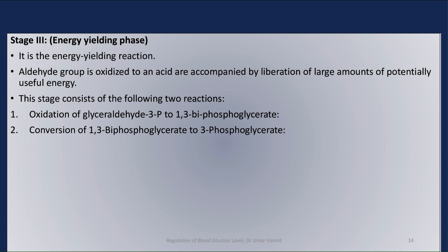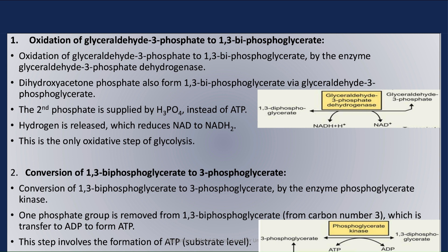Step 1 is the oxidation of glyceraldehyde-3-phosphate to 1,3-bisphosphoglycerate, catalyzed by the enzyme glyceraldehyde-3-phosphate dehydrogenase. Dihydroxyacetone phosphate also forms 1,3-bisphosphoglycerate via glyceraldehyde-3-phosphate. The second phosphate is supplied by phosphoric acid instead of ATP. Hydrogen is released, which reduces NAD to NADH2. This is the only oxidative step of glycolysis.